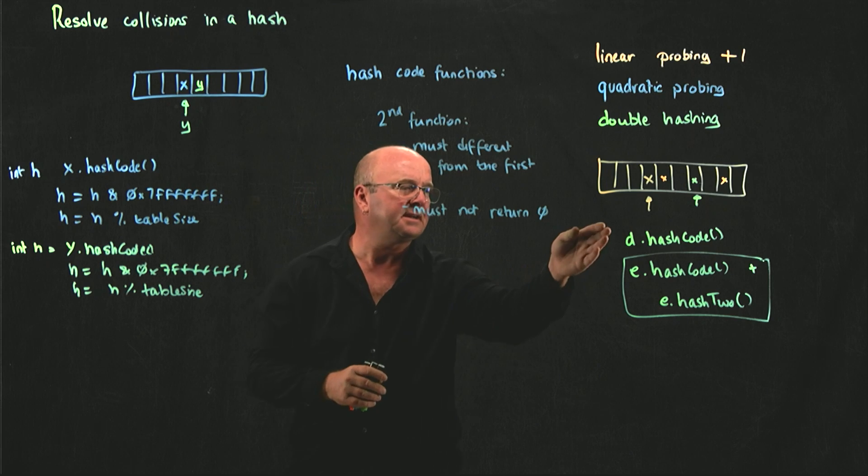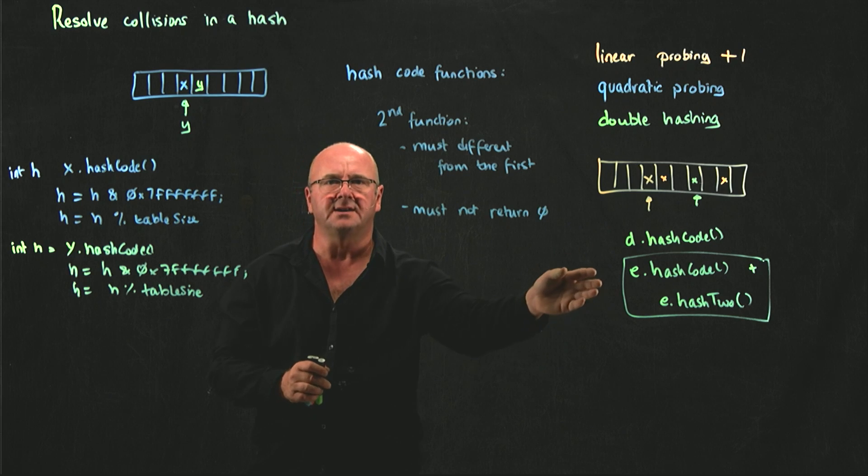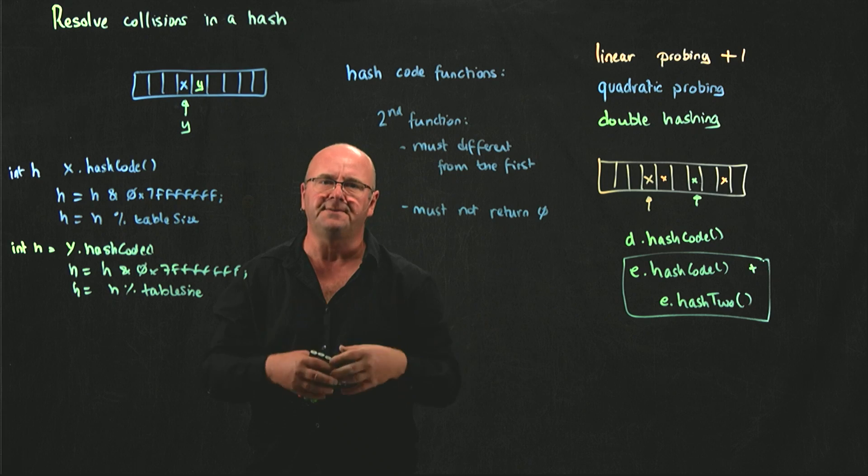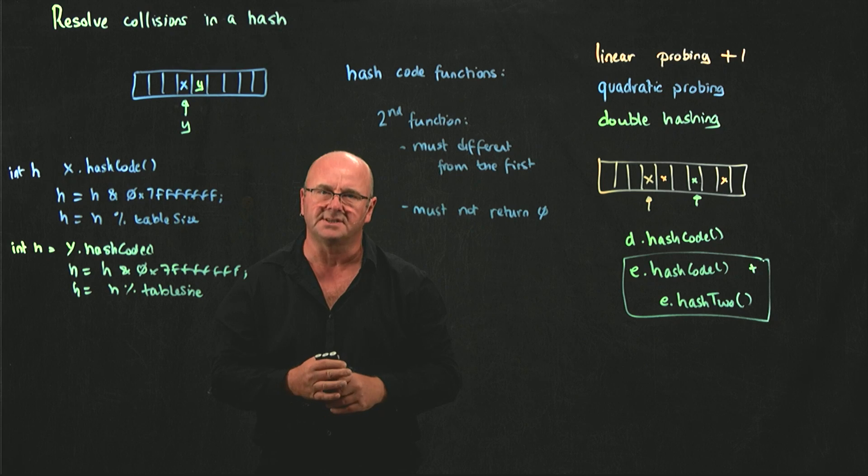We need our standard hash function that we call to get the initial code, and then we need our second hash function that we're going to call if the table's full, or if the table is occupied at that position.